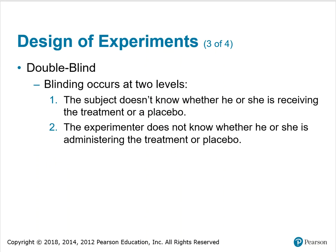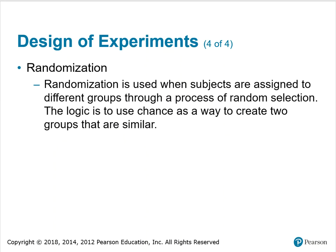Double blind: blinding occurs at two levels. The subject doesn't know whether he or she is receiving the treatment or a placebo, and the experimenter doesn't know whether he or she is administering the treatment or a placebo. Randomization is used when subjects are assigned to different groups through a process of random selection. The logic is to use chance as a way to create two groups that are similar.